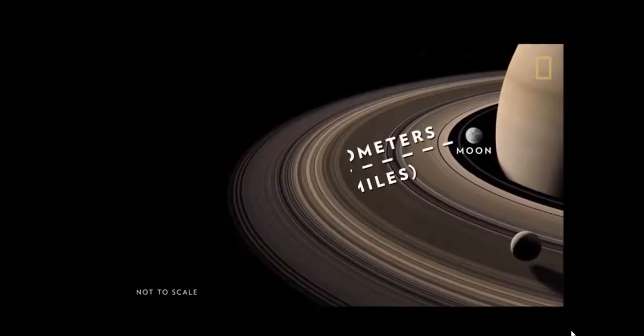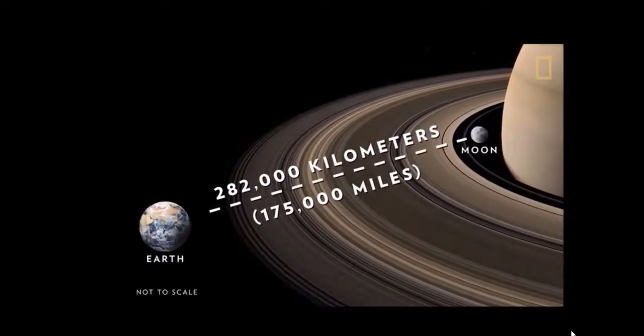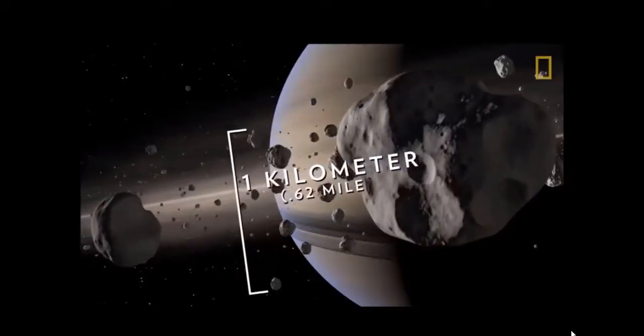Saturn's massive rings are wide enough to fit Earth and the Moon apart, yet are barely a kilometer thick.